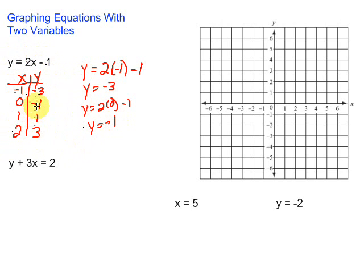These are just ordered pairs. We can pull them out of the table. It's just the ordered pair negative 1, negative 3. This is the ordered pair 0, negative 1. This is the ordered pair 1, 1. And this is the ordered pair 2, 3. Let's go ahead and graph those.